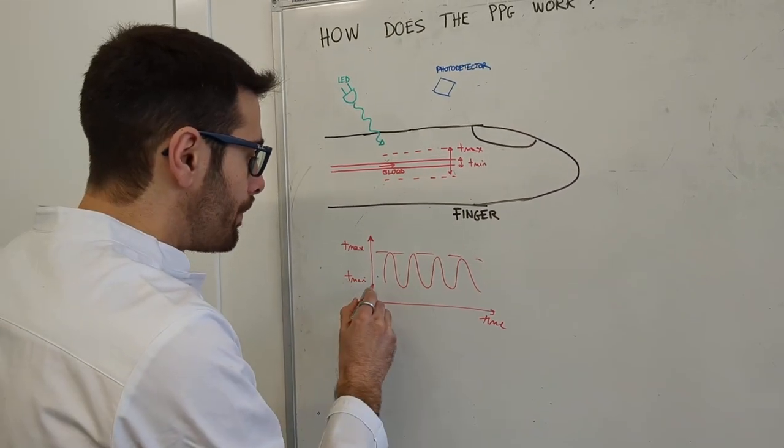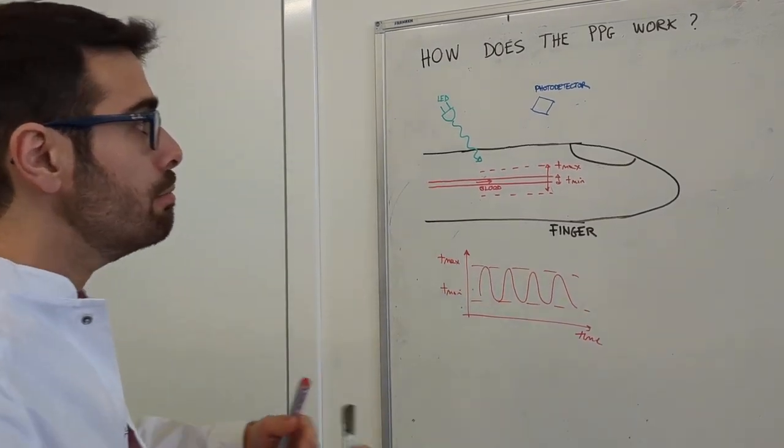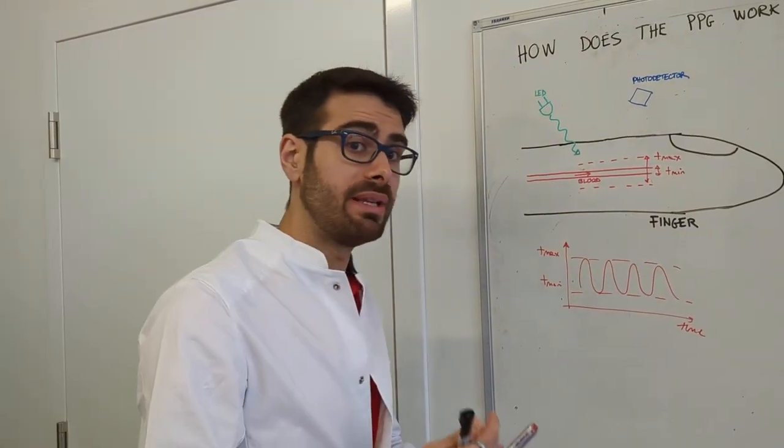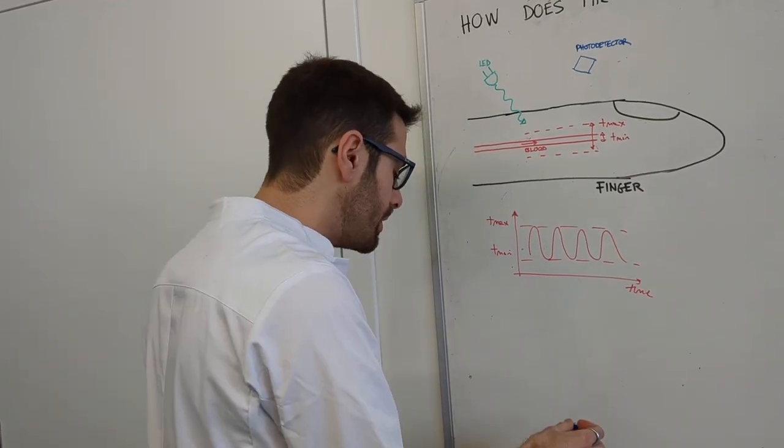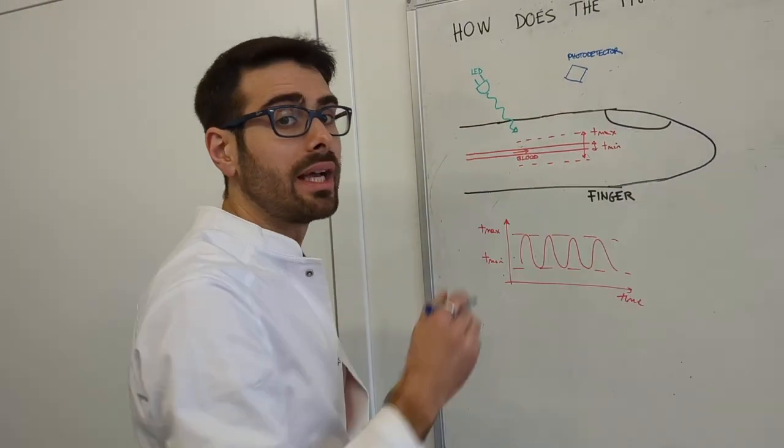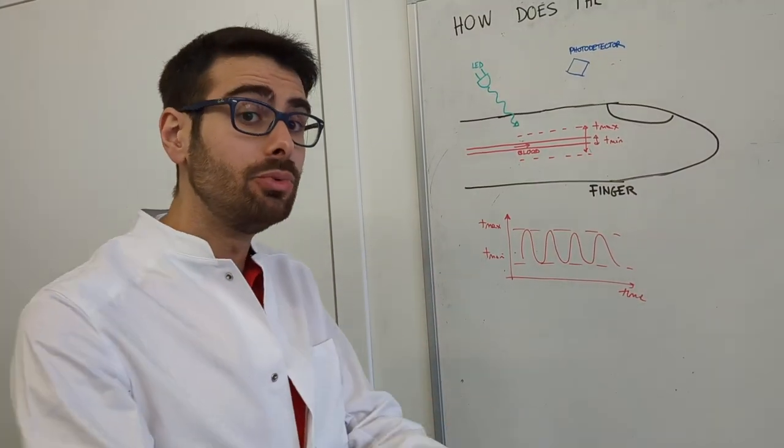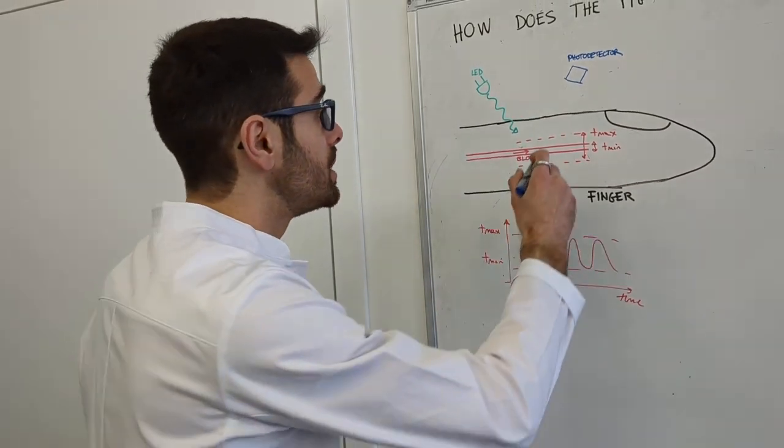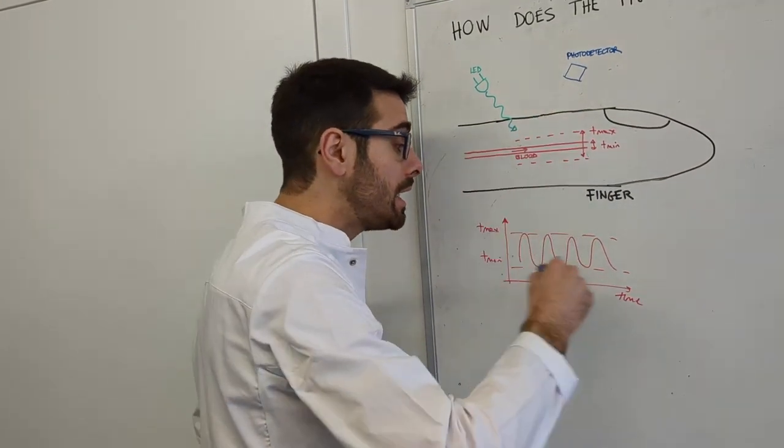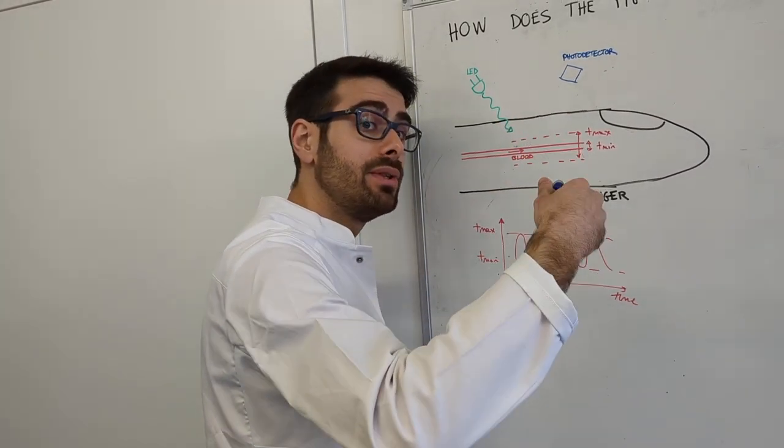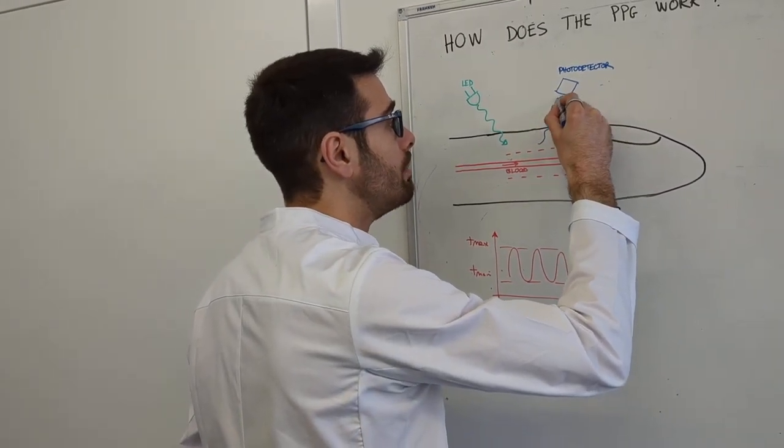Now let's see how this oscillating response moves and builds up the PPG signal. That starts with a second optoelectronic component called the photodetector, which is receiving the light. These photons have interacted with the finger, including this oscillating diameter and the burst of blood, and are reflected back.